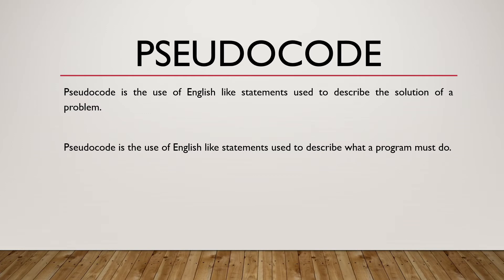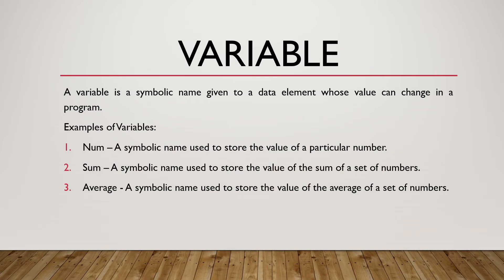In pseudocode, we make use of what is known as a variable. A variable is a symbolic name given to a data element whose value can change in a program. Examples are: Num, a symbolic name used to store the value of a particular number.